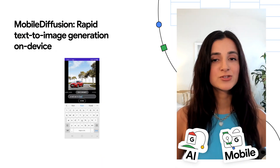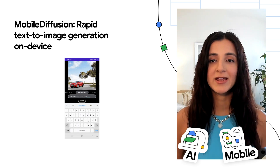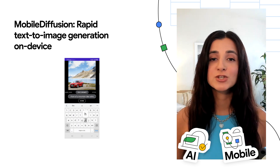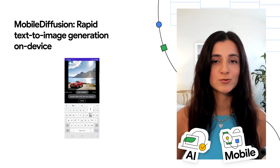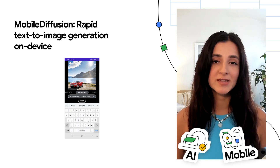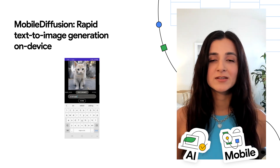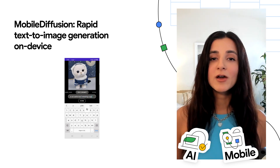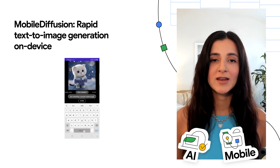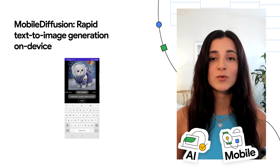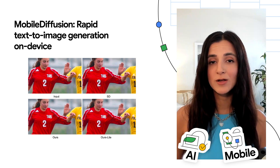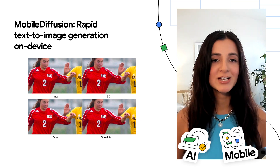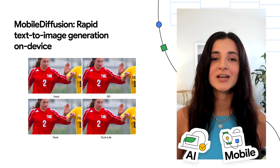Text-to-image diffusion models have shown exceptional capabilities in generating high-quality images from text prompts. But leading models feature billions of parameters and are consequently expensive to run, requiring powerful desktops or servers. Mobile Diffusion is an efficient latent diffusion model specifically designed for mobile devices. The model has been tested on iOS and Android premium devices and can run in half a second to generate a 512x512 high-quality image. To learn more about the model architecture and see benchmarking results, check out the link below.